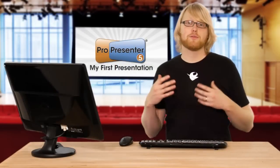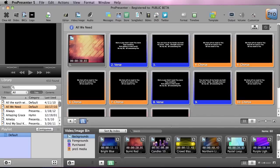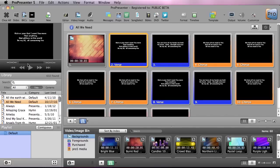Now that we've seen all the different layers that make up ProPresenter, let's create our first presentation. Starting with the interface: on the left column, you'll see a preview region that shows any slides up on the screen. This is also resizable so you can get a larger preview. Underneath that, you'll see the library, which contains all of the different documents you have available — everything from songs to message notes to announcement loops. Underneath there is where you can create playlists of all your different documents for an individual event.